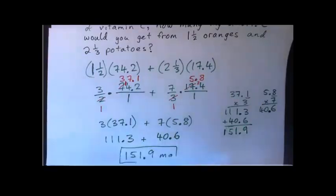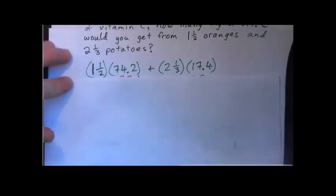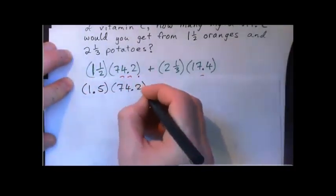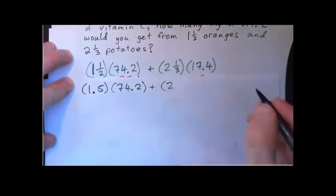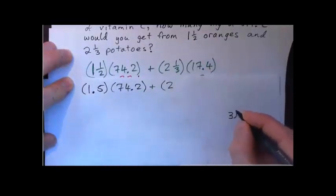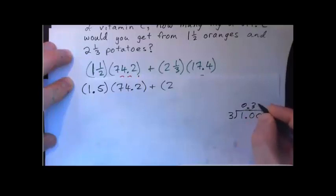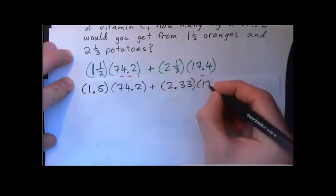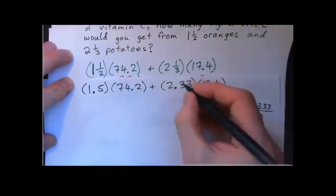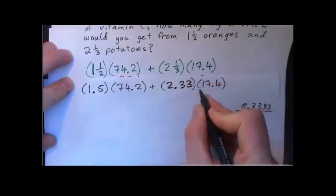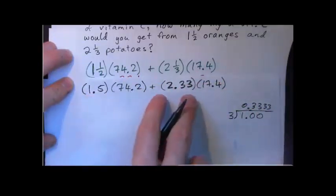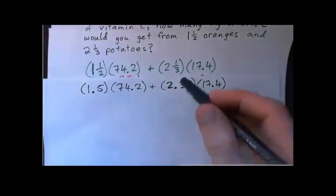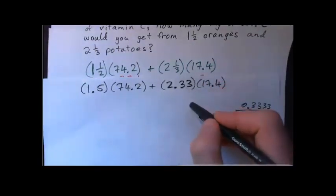Just so you know, you could have turned everything into decimals. Like one and a half would have become one point five, times 74.2. And for two and a third, you'd go three into one and get zero point three three three three repeating, so you'd round it to two point three three, then times 17.4. This would be rounded because the threes go on forever, so you'd get very close to the same answer but slightly different due to rounding. You could multiply, turn everything into decimals, add the answers, and get almost exactly the same thing.